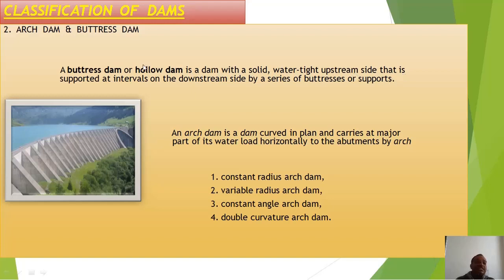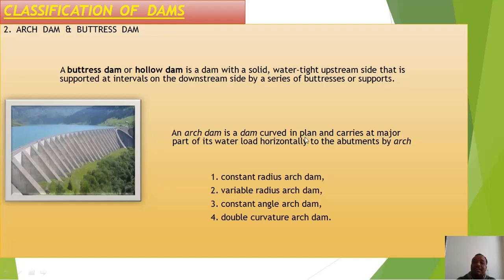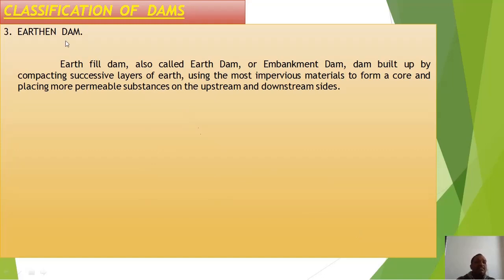In a buttress dam, solid buttresses are provided on the downstream side. An arch dam carries the major part of its water load horizontally to the abutments by arch action — types include constant radius arch dam, variable radius arch dam, constant angle arch dam, and double curvature arch dam. An earthen dam, also called an embankment dam, is built up by compacting successive layers of earth using the most impervious material so that water may not pass through it.